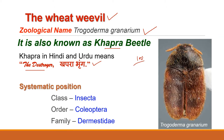Regarding its taxonomic status, it belongs to class Insecta, order Coleoptera, family Dermestidae, genus Trogoderma and species granarium. So its zoological name is Trogoderma granarium.